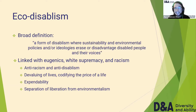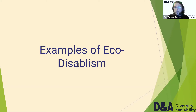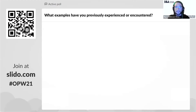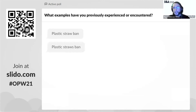As part of this talk, I think it's quite important to go over some examples of eco-disabilism, so that everyone gets an understanding of what I'm talking about in a real-life case example context. But before I do that, I want to know from the audience — 50% of you said you sort of have a grasp of this — so what examples have you previously experienced or encountered? There was a giveaway in the text description of this event. We've already got one: the plastic straw ban.